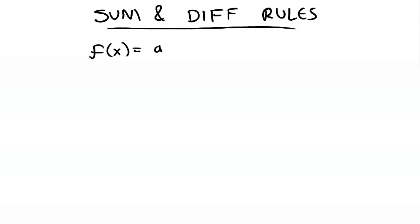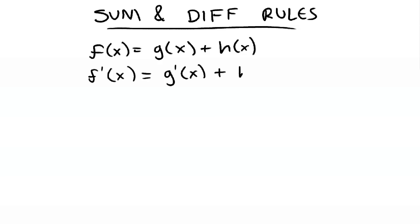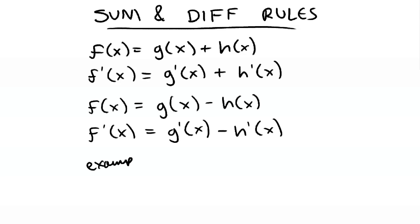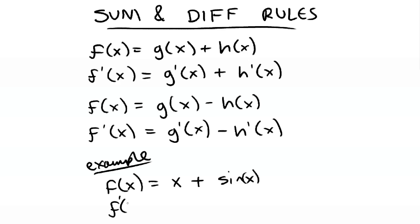If f of x is equal to g of x plus h of x, then f prime of x is equal to g prime of x plus h prime of x. Similarly, if f of x is equal to g of x minus h of x, then f prime of x is equal to g prime of x minus h prime of x. For example, if f of x is equal to x plus sine of x, then f prime of x is equal to 1 plus cosine of x.